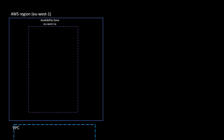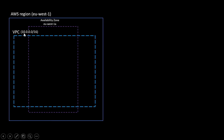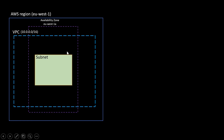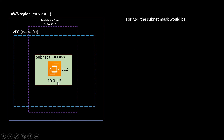Let us see this with an example in AWS. Suppose we have an AWS region with an availability zone, and we created a VPC in this region with CIDR block 10.0.0.0/16. Inside this VPC we created a subnet in an availability zone with CIDR block 10.0.1.0/24, and inside that subnet we have an EC2 machine with IP address 10.0.1.5.